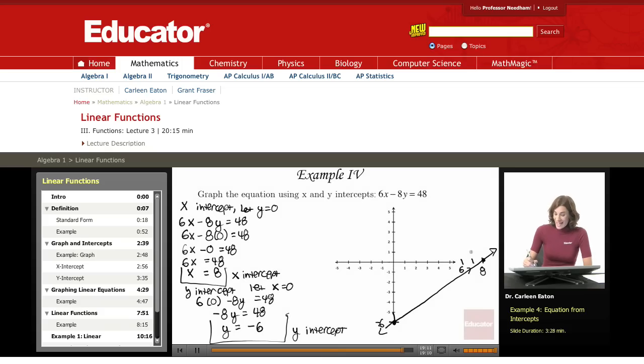So remember, the value for the x-intercept is x is 8, y is 0. The value for the y-intercept is that y is 0 and x is negative 6. So they asked me to graph this equation using x and y intercepts.